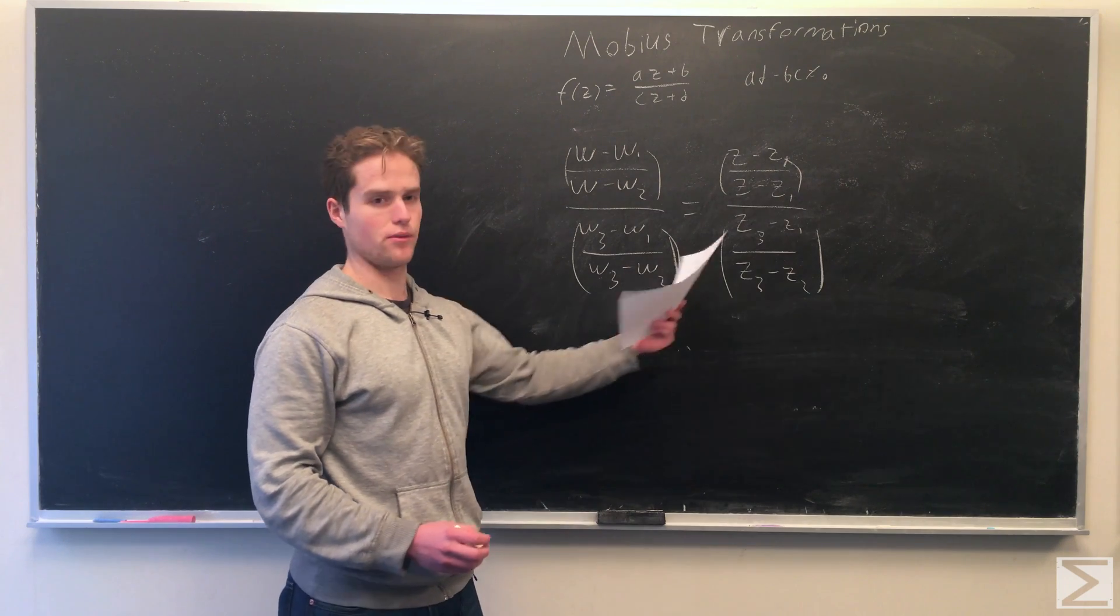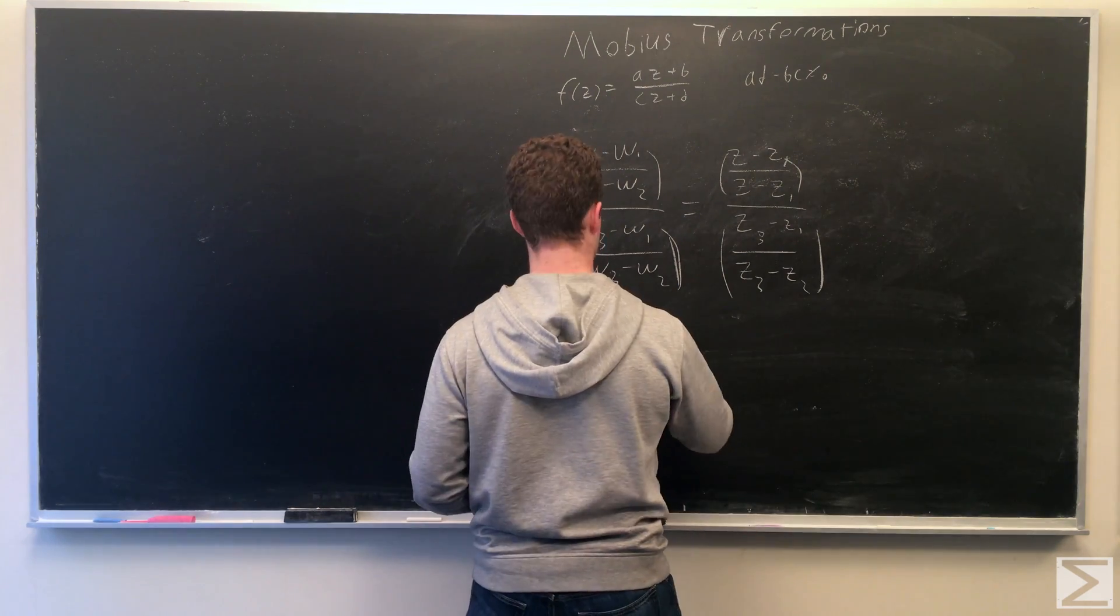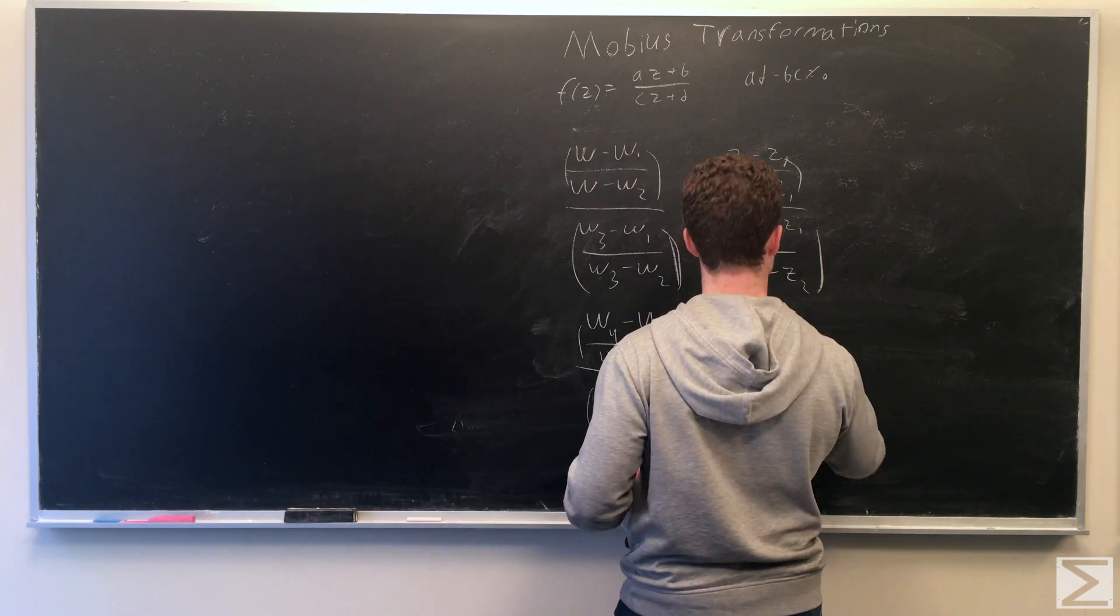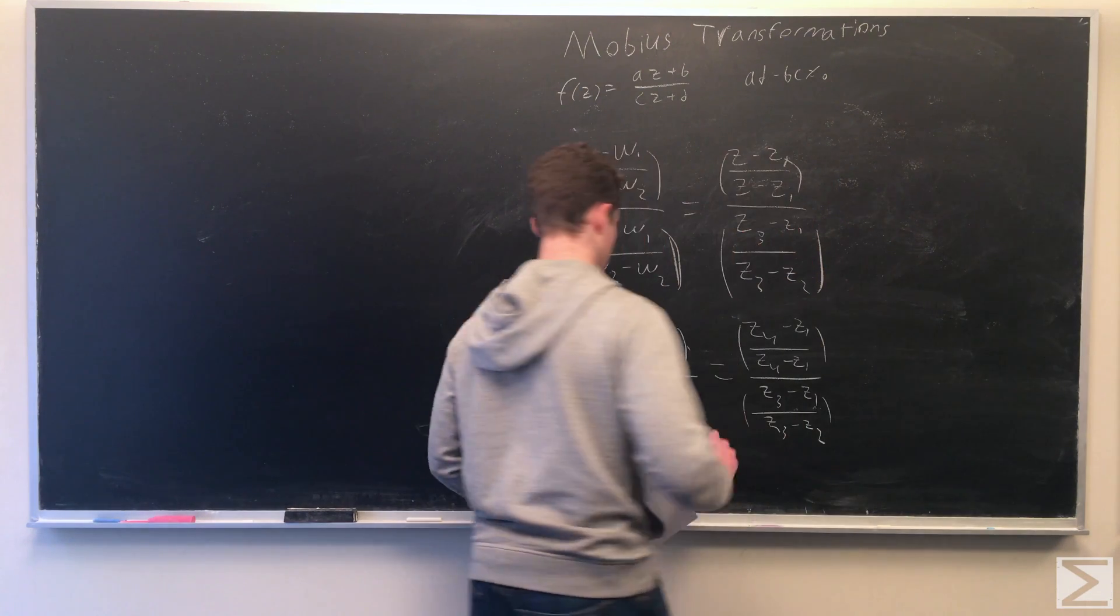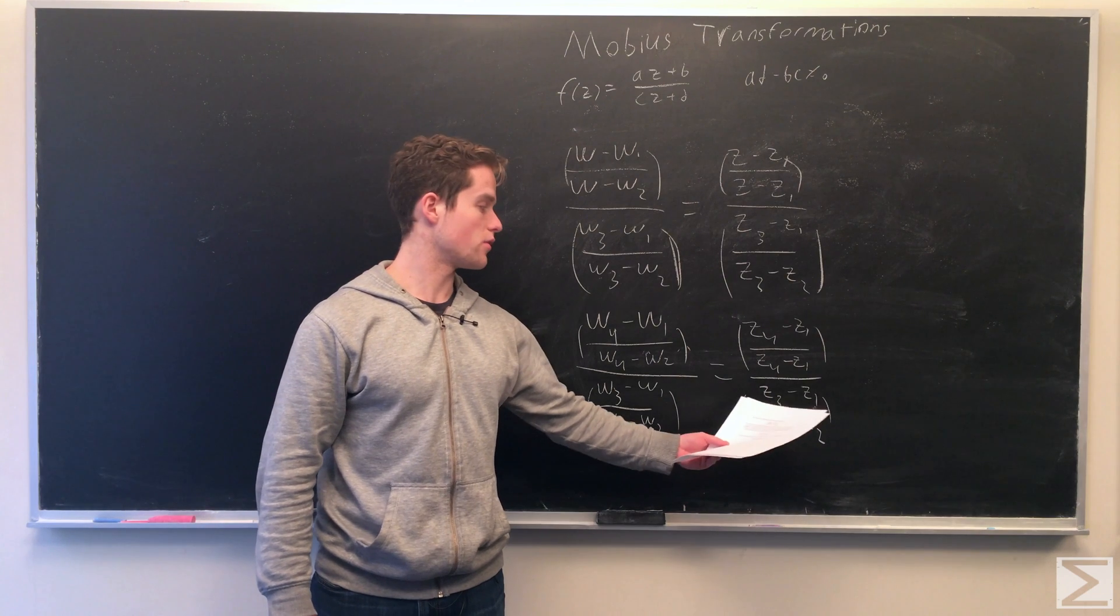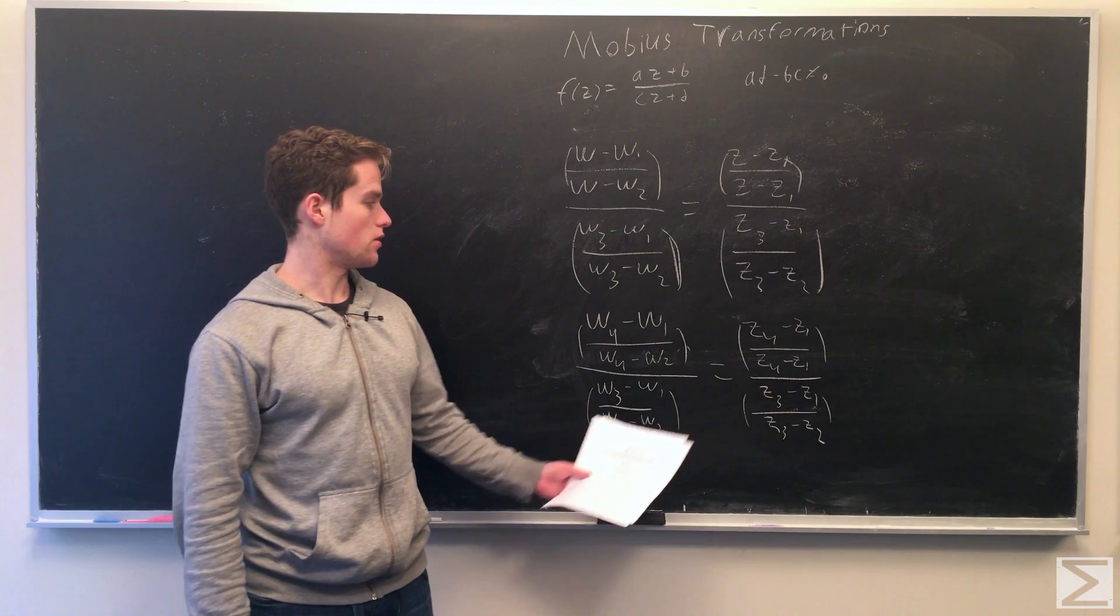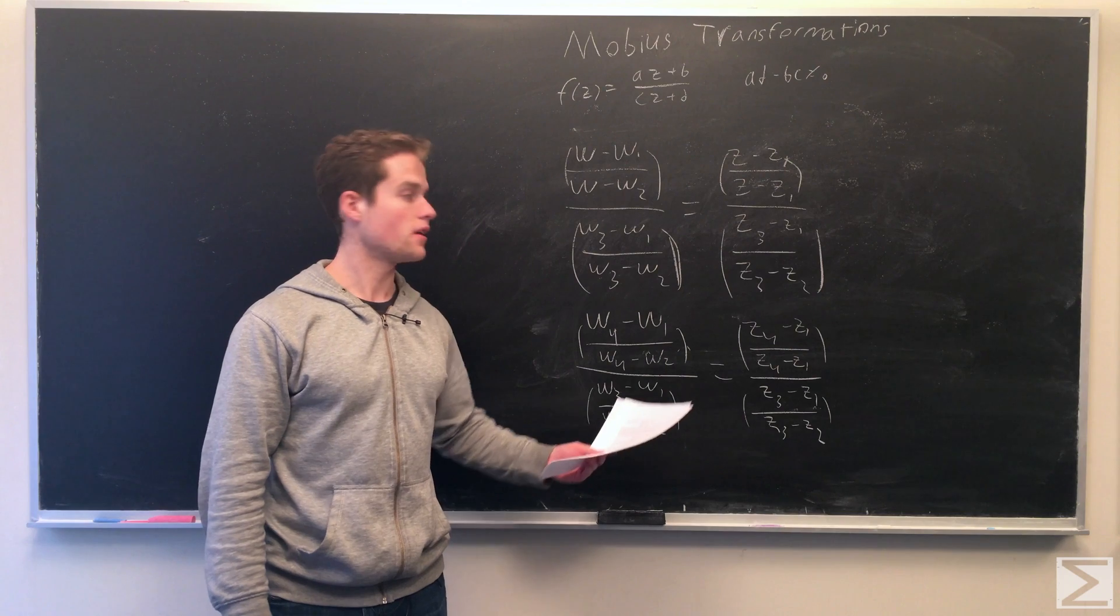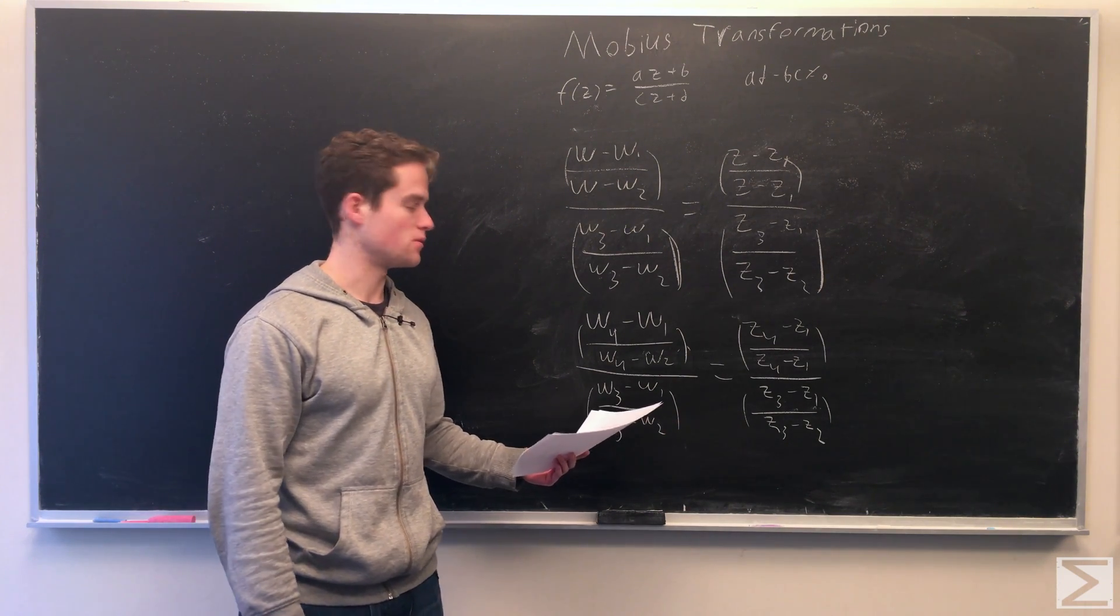So one more thing we can know about this form, that if we have some point z4 corresponding to w4. So these ratios, this top ratio divided by this bottom ratio, this is known as the cross ratio of four points. And so, according to this, we see the cross ratio of four points and their images have the same value. And so the cross ratio of four points is preserved under the Mobius transformation, which is another neat property.